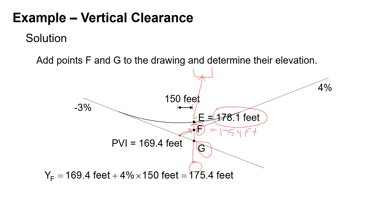Next we can find the elevation at G: 169.4 feet, the elevation of the PVI, going down the grade of 3% across 150 feet gives us an elevation of 164.9 feet. Doing the drawing will help you keep these organized. We can clearly see that 178.1 should be the high point, then 175.4, then 164.9 feet, laying out those three points here.